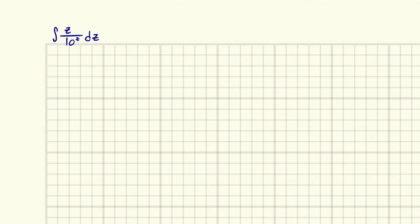Eric Burgess here and we've been given a pretty devious integral — it is the integral of z over 10 raised to the z dz. The reason I say this is devious is because you have to be pretty on top of your game when it comes to using log properties with something like this.